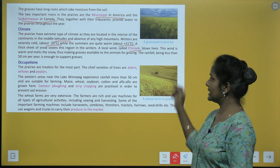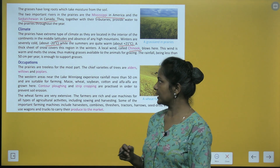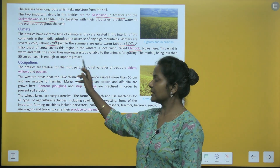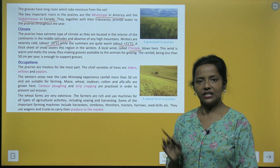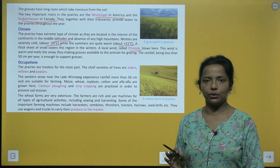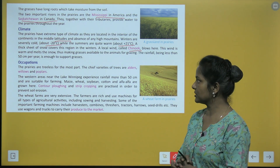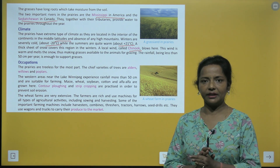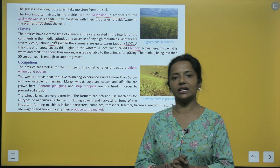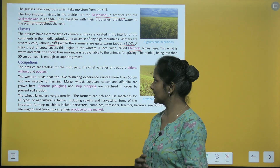The rainfall being less than 50 cm per year is enough to support grasses. Jitna rainfall vahan hota hai — less than 50 cm per year — woh enough hai, woh kaafi hota hai grass ko support karne ke liye.